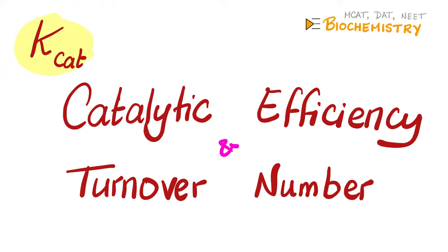Today, it's time to turn our attention to the K-Cat, the catalytic constant, which is a measure of catalytic efficiency of the enzyme. This is also known as the turnover number, because we are turning over the substrate into products.